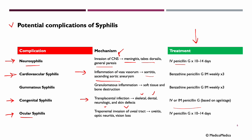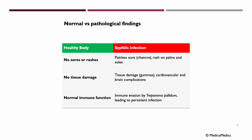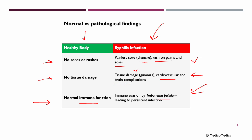We can also mention ocular syphilis — the bacteria invade the uveal tract, leading to uveitis, optic neuritis, and potentially vision loss. In a healthy body, there should be no sores or rashes, no tissue damage, and normal immune function. In a patient with syphilis, we would expect a painless sore or chancre in primary syphilis, rash on palms and soles in secondary syphilis, tissue damage or cardiovascular and brain complications in tertiary syphilis, and immune evasion by Treponema pallidum leading to persistent infection.